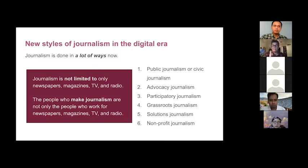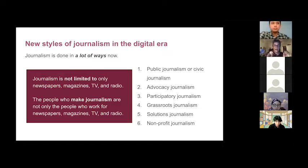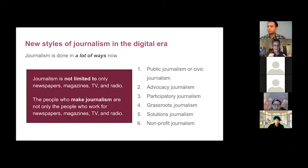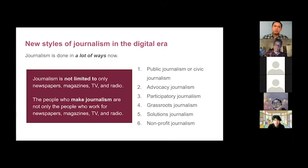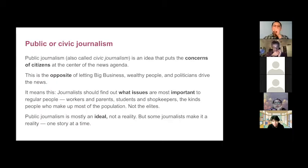Now I'm going to talk about six types of journalism in order, with at least one slide for each. The first idea I already mentioned: journalism is not limited to the products of a journalism company or business. Journalism exists in many other places now, and the people who make journalism are not all journalists. Some people will just accidentally be a journalist for one day because something happens to them.